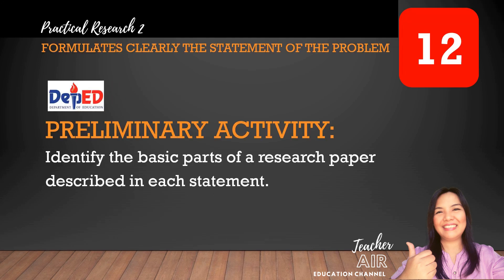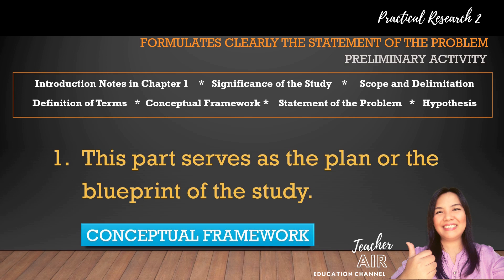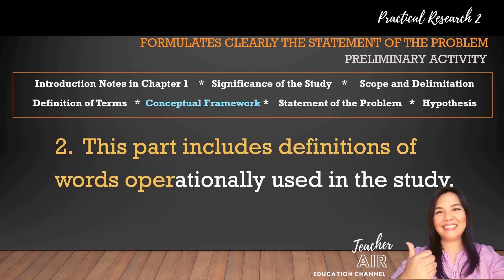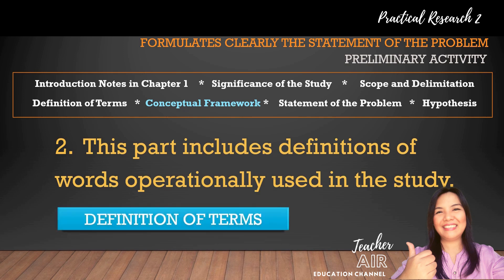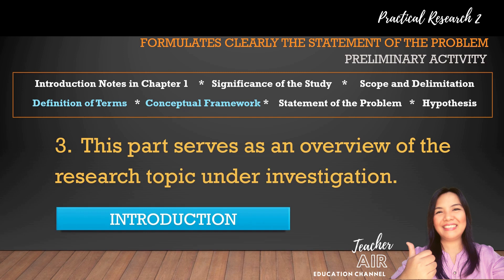Let's have a preliminary activity. The task is for you to identify the basic parts of a research paper described in each statement, with options on the topmost part of the slide. Number one, this part serves as the plan or the blueprint of the study. The answer is conceptual framework. Number two, this part includes definitions of words operationally used in the study — this is just a review of our past lesson. The answer is definition of terms. Number three, this part serves as an overview of the research topic under investigation. The answer is introduction — it's the first part of the research paper.